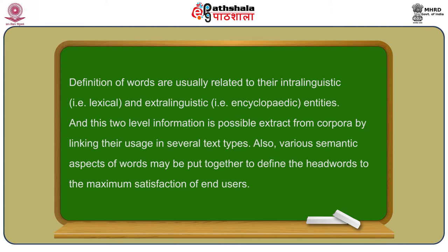The semantic information — the information about the meaning of words — is another important area where we need to refer to context. As we know, when a word is used in a text, it gives many senses and many meanings. So the whole range of meanings, synonyms, senses, and sense-variations — the wide scope of these senses — can be captured from the corpus itself. Corpus provides an empirical resource where you can identify a particular word's total range of meanings and capture and represent those meanings in the dictionary.